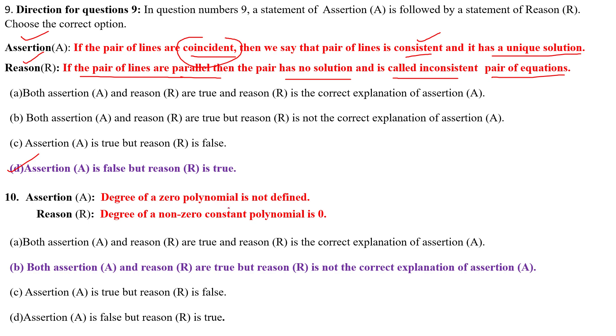Next, degree of a zero polynomial is not defined. Very good, this is correct. But the degree of non-zero constant polynomial is zero. Assertion A is correct and reason R is correct. Both assertion A and reason R are true, but reason R is not correct explanation of assertion A.